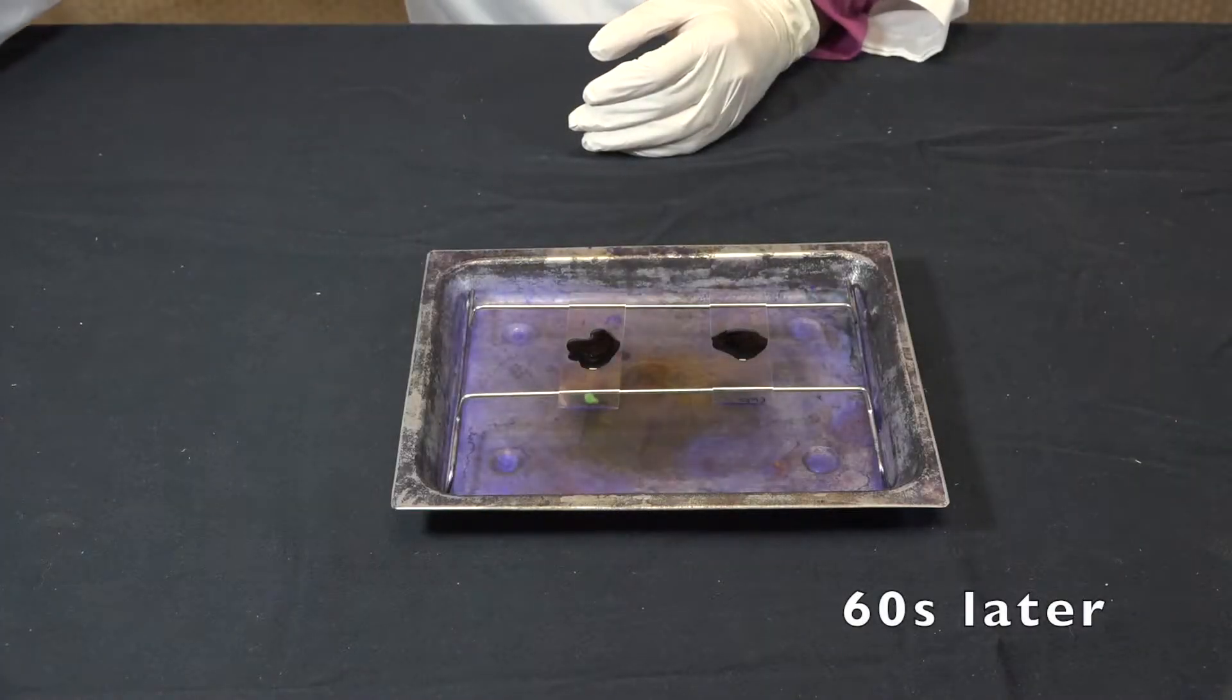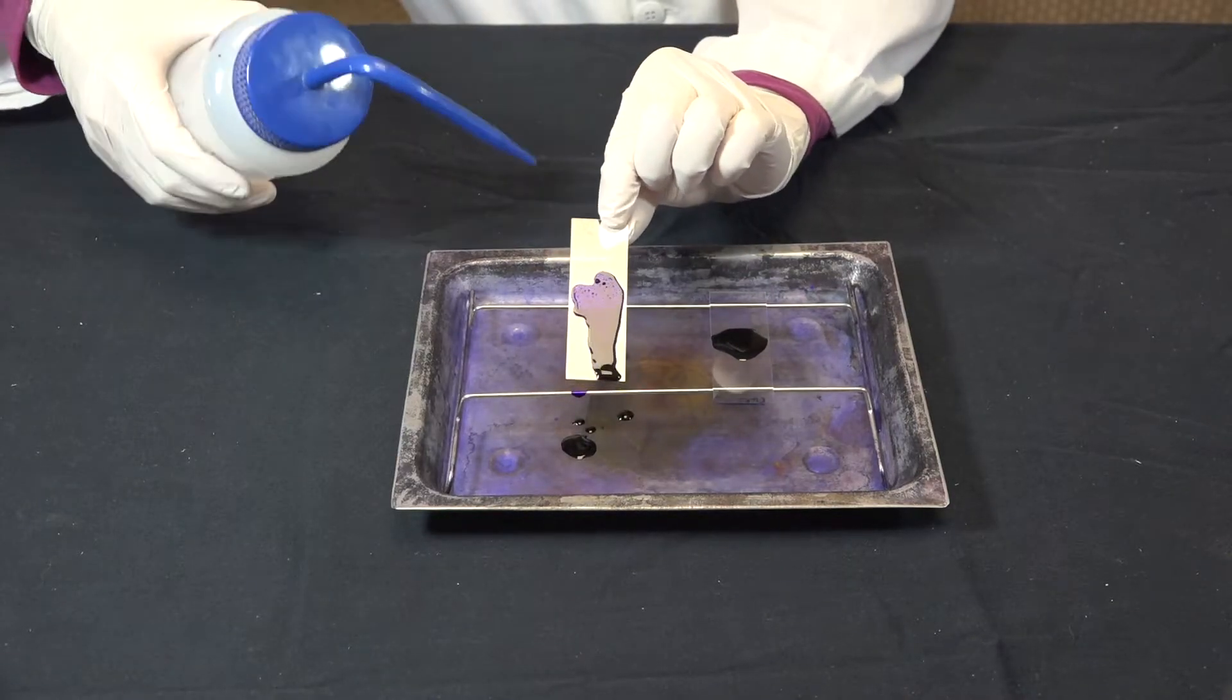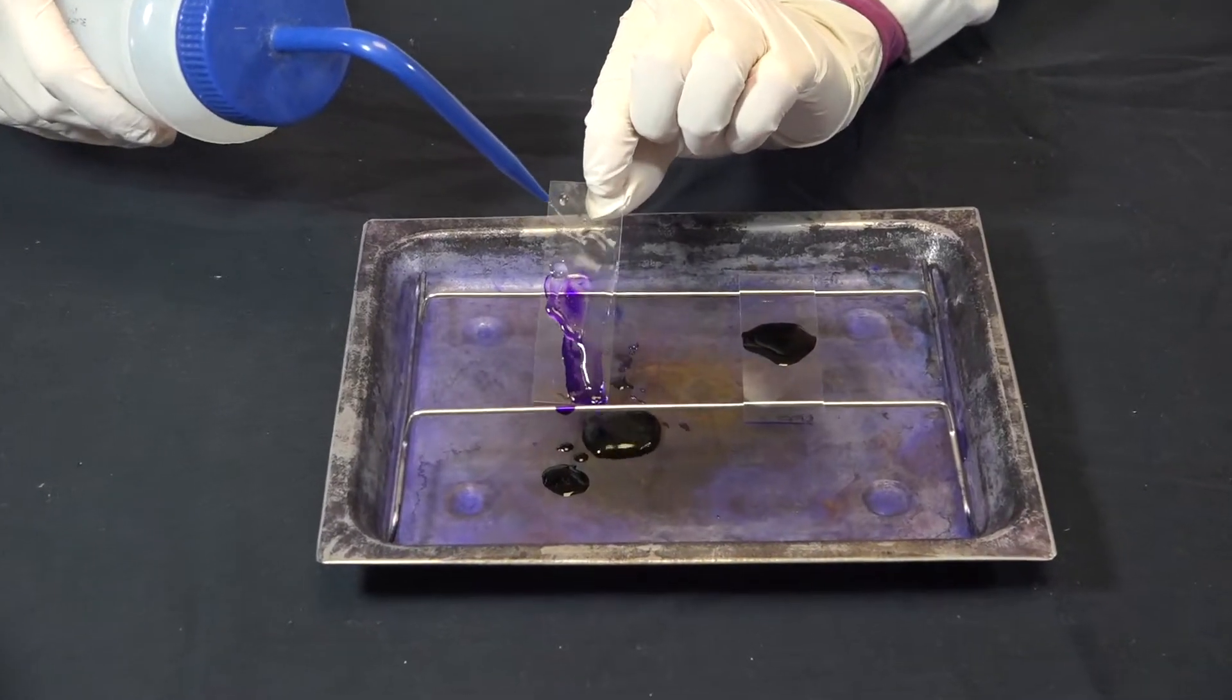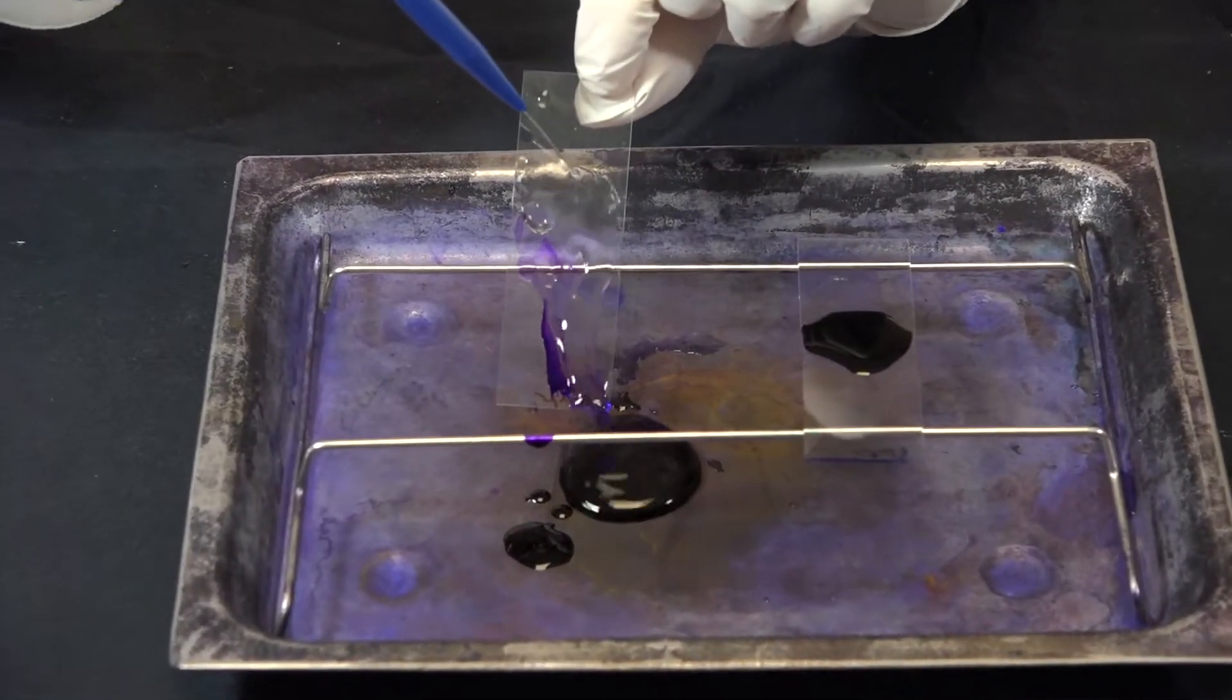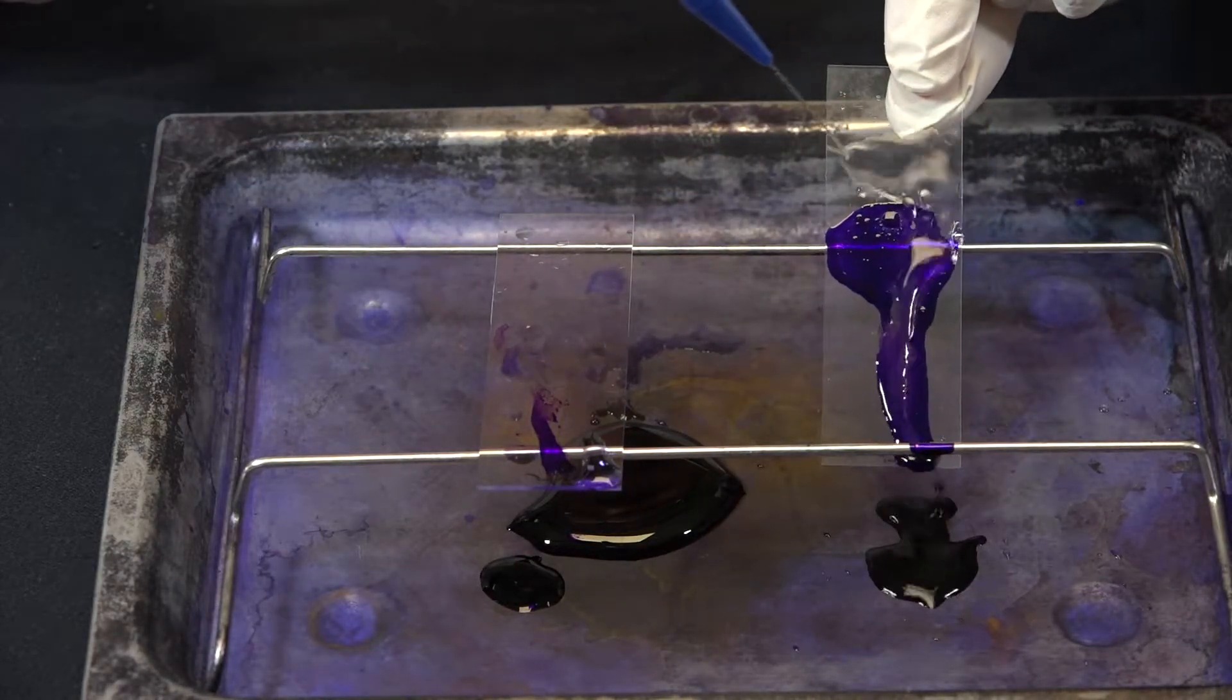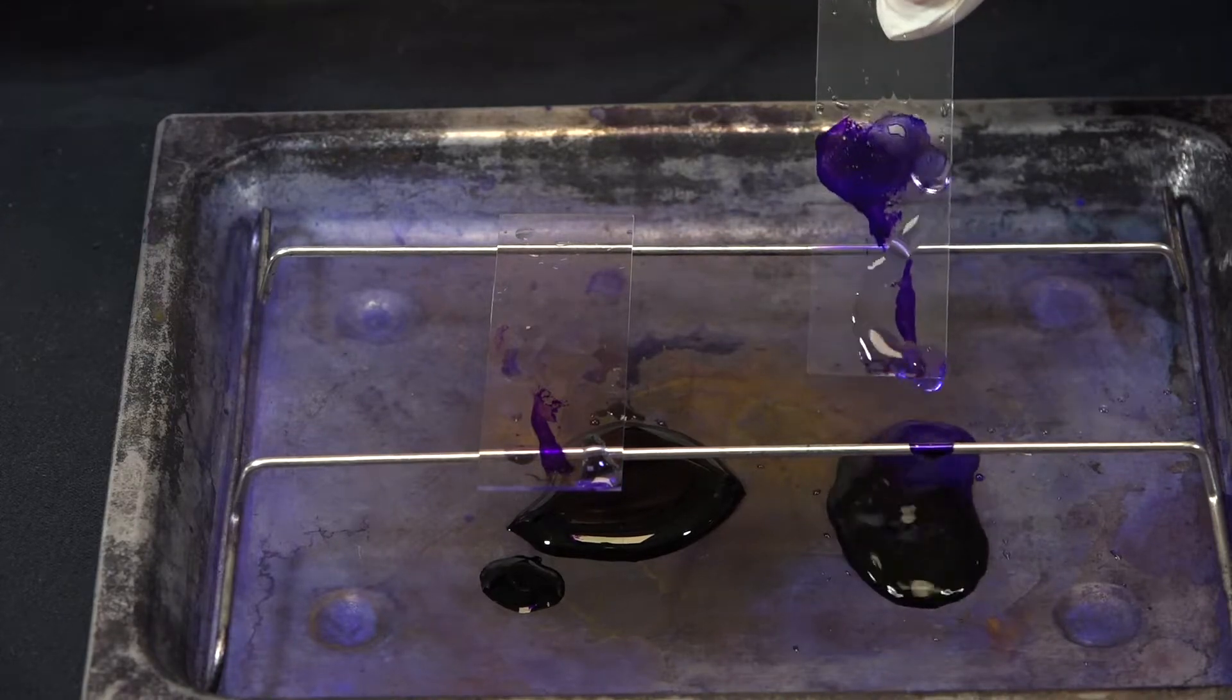Now I'm going to rinse off the excess crystal violet with distilled water. Spray the water above the smear and not directly on it. It's okay if a little crystal violet remains at the bottom of the slide.